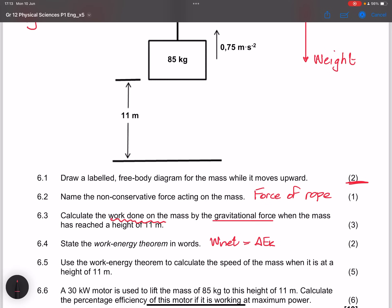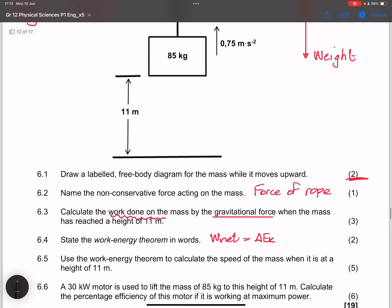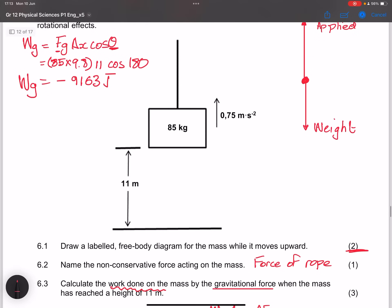Now they say to us use the work energy theorem to calculate the speed of the mass when it is at 11 meters. Now I want you to note this time around we are actually looking at a force that is applied and we've got an acceleration which means of course it's going to change kinetic energy, isn't it? So let's find out what would be the amount of force that is exerted by the rope.